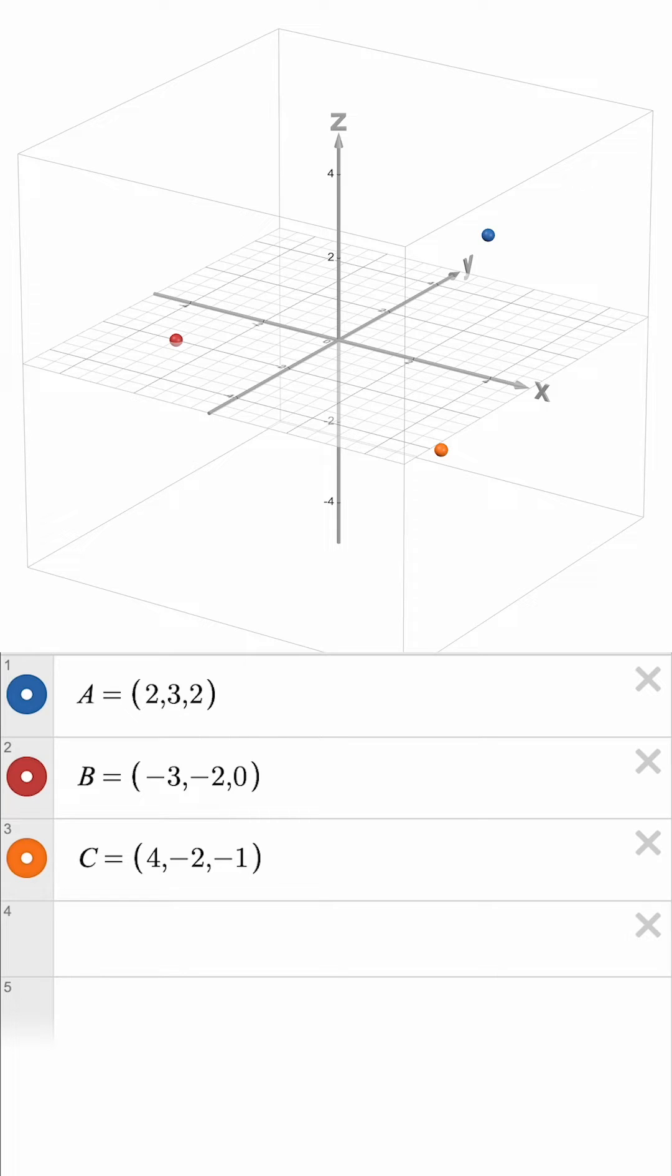We can quickly get a line segment graphed between two points by using the segment command and typing in two coordinates as inputs. Using the points we already named, we can create a segment connecting A and B.